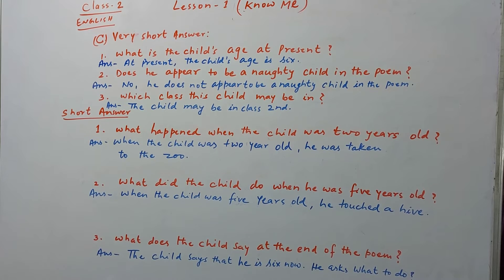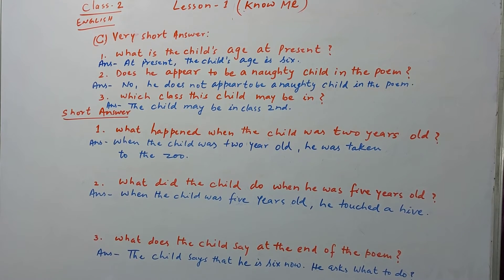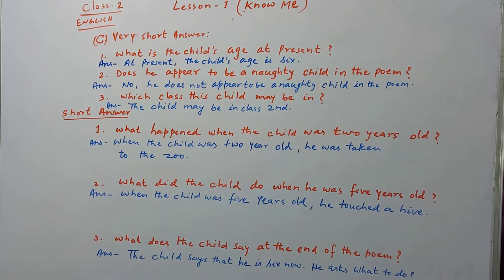Question number 2: Does he appear to be a naughty child in the poem? Answer: No, he does not appear to be a naughty child in the poem. Question 3: Which class may this child be in? Answer: The child may be in class 2nd.